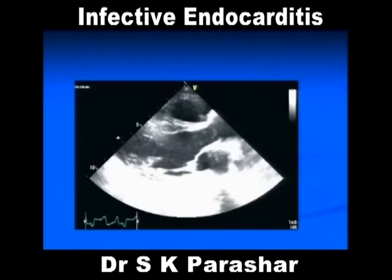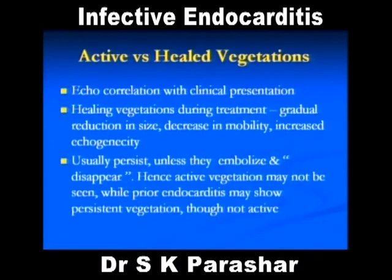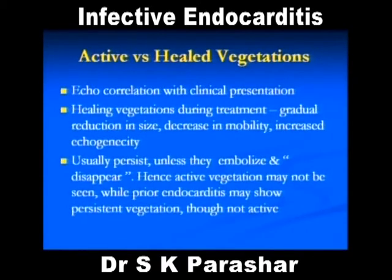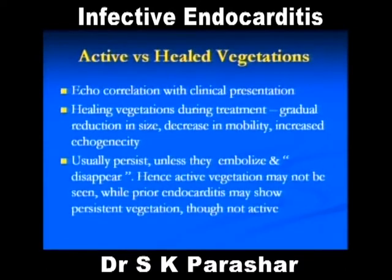Very important: active versus healed vegetation. A vegetation never disappears unless it embolizes, so a vegetation will remain. The problem is echo correlation with clinical presentation. If you are finding a vegetation but the patient is perfectly all right — no fever, no toxemia — that means it is a healed vegetation. As vegetations are treated or they heal, they become reduced in size and more echogenic because they become fibrosed. They usually persist unless they embolize. Active vegetation may not be seen on echo, which is why it is very important to take a history.